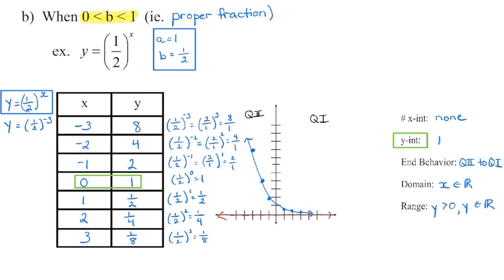Continuing on: when x is negative 2, we substitute in negative 2 for x, reciprocate the base so the exponent becomes positive. 2 to the power of 2 is 4, 1 to the power of 2 is 1. When x is negative 2, y is positive 4 — plot that. We continue that process to generate all our points and then connect them with a smooth curve.